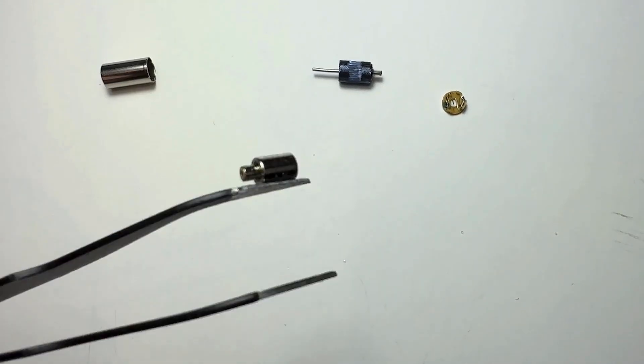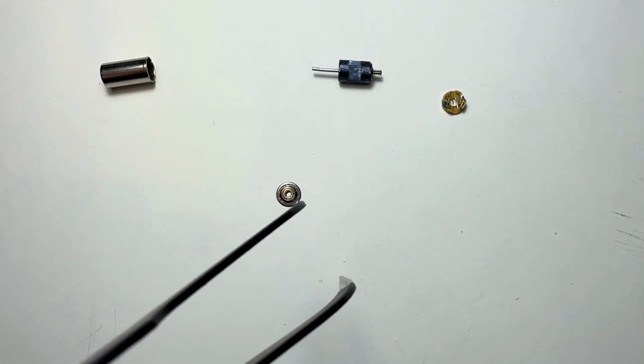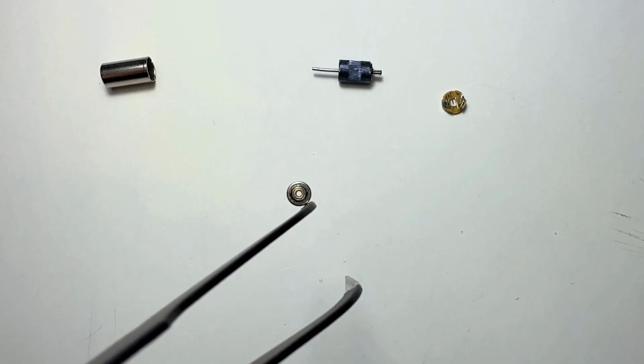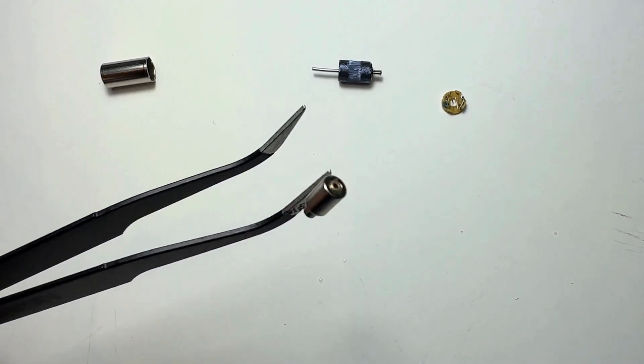The stator, or permanent magnet, produces a magnetic field that interacts with the magnetic field of the rotor, inducing motion in the rotor. The use of a permanent magnet eliminates the need for electromagnetic coils in the stator.